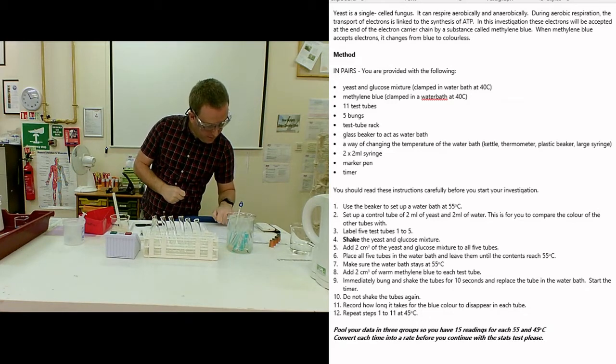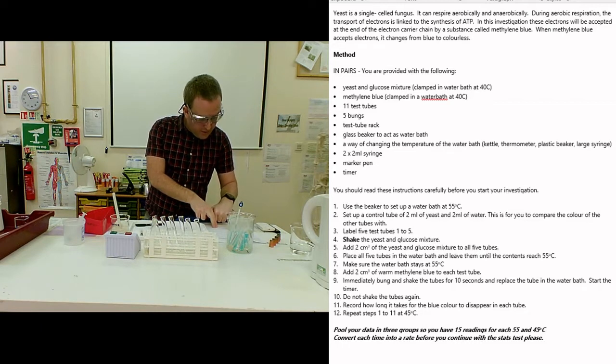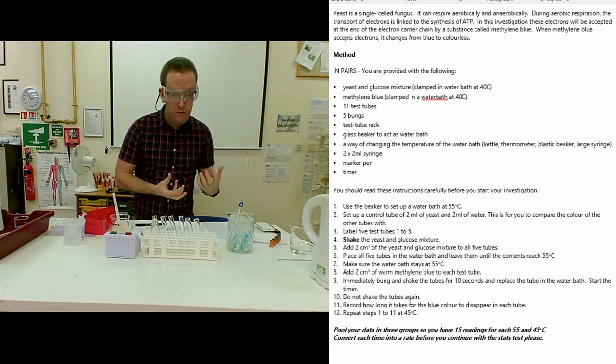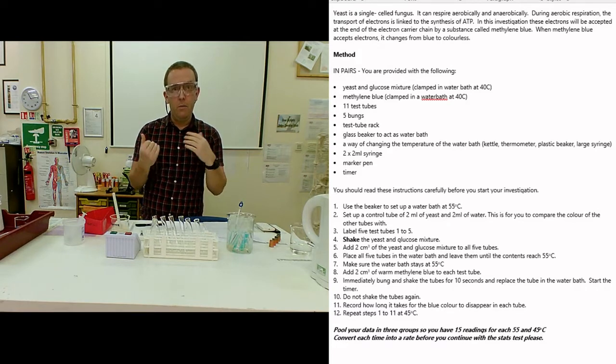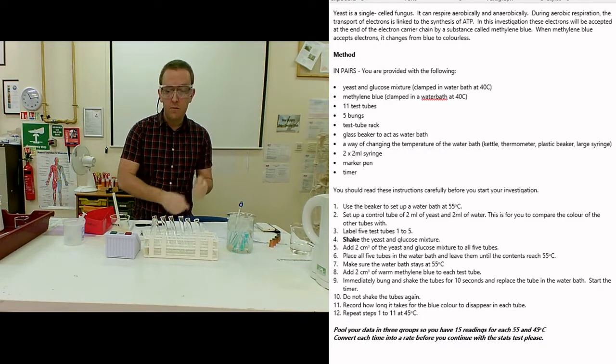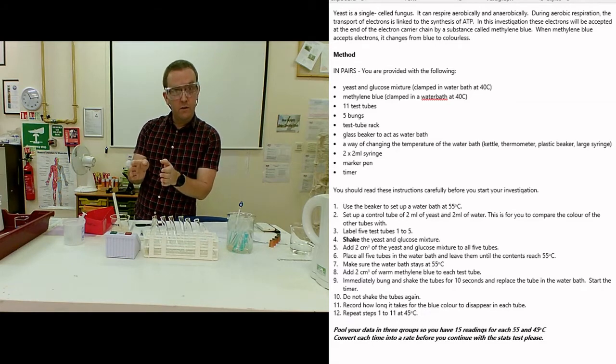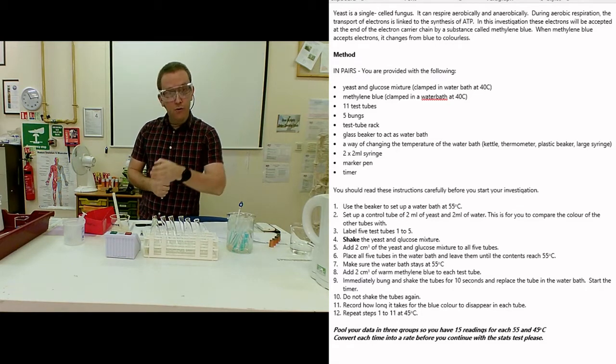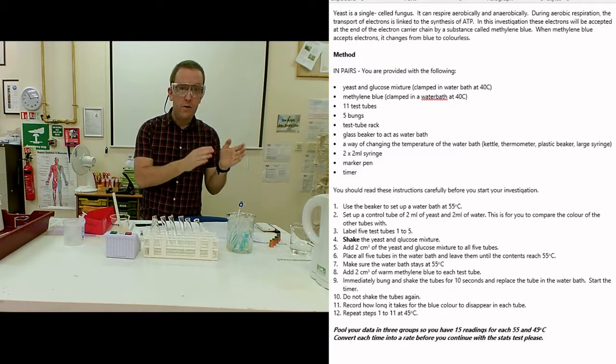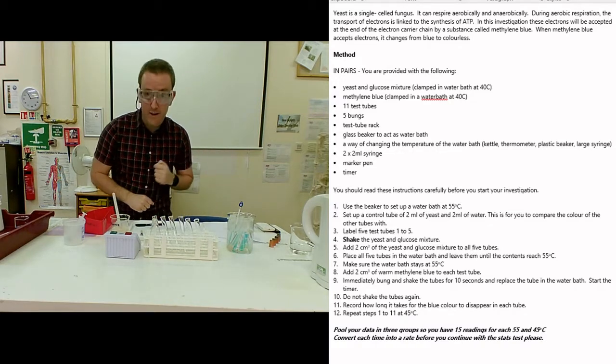It says here: add 2 cubic centimeters of warm methylene blue to each test tube immediately, bung and shake the tubes for 10 seconds, replace the tubes in the water bath, and start the timer. Now I don't have five hands or ten hands, so I can't do this all at the same time. I'm going to do a really important scientific process here for this lab work called staggered addition. I'm going to add maybe two, shake them, start the stopwatch, put those down, and prepare myself for the next ones. Then at maybe 20 seconds I'll add those in. Then I'll know for tubes two and three I just deduct 20 seconds off the time at the end. That way all of them get a nice accurate measurement of their time without the delay of me having to put in the 2 cubic centimeters of methylene blue and give them the 10 seconds of shaking.